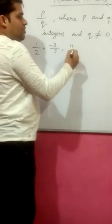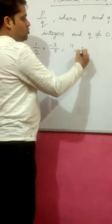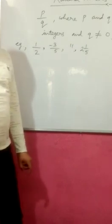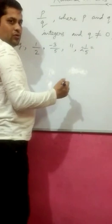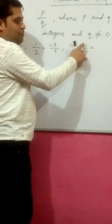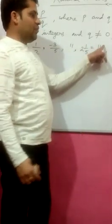Suppose any number which is given in the form of mixed, suppose 2 whole 1 by 5. This is also a rational number because it can be converted into the form of P by Q. 5 times 2, 10 plus 1, 11 by 5. This is in the form of P by Q.